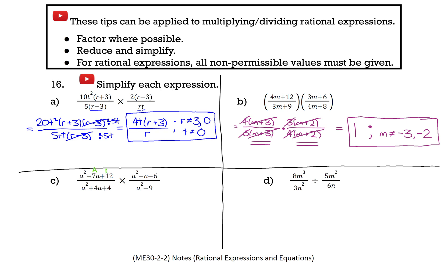Factoring each part: top left gives (a plus 4)(a plus 3). Bottom left gives (a plus 2)(a plus 2). Top right — adding to negative 1 and multiplying to negative 6 — gives (a minus 3)(a plus 2). Bottom right is confirmed as a difference of squares: square root of a squared is a, square root of 9 is 3, so it factors to (a plus 3)(a minus 3).